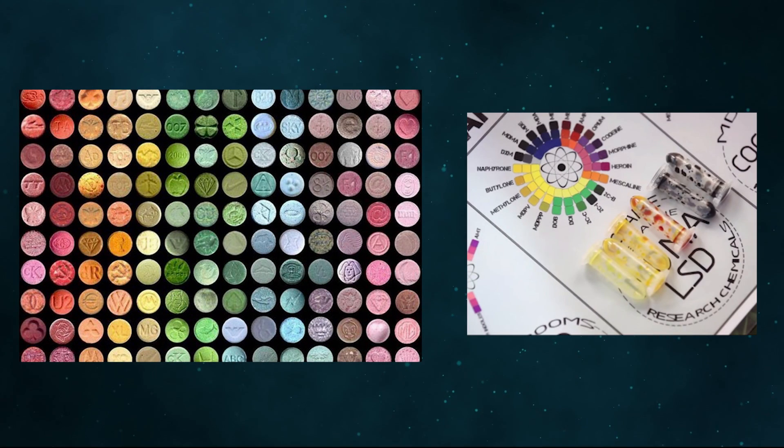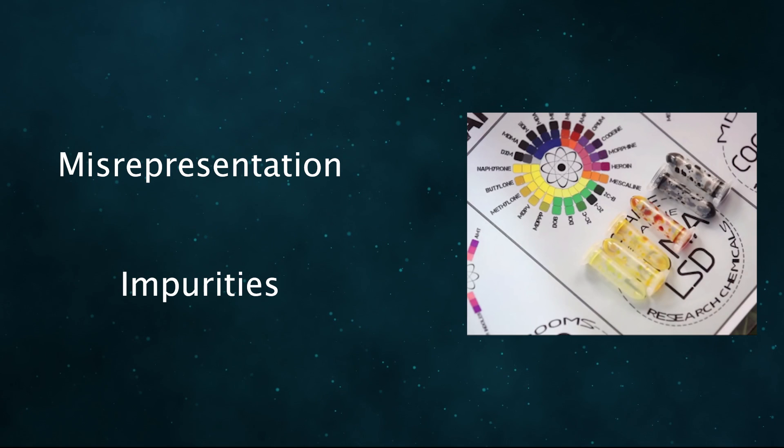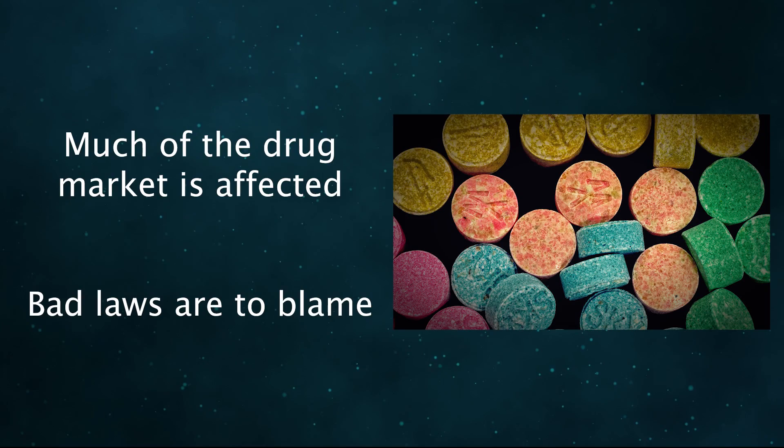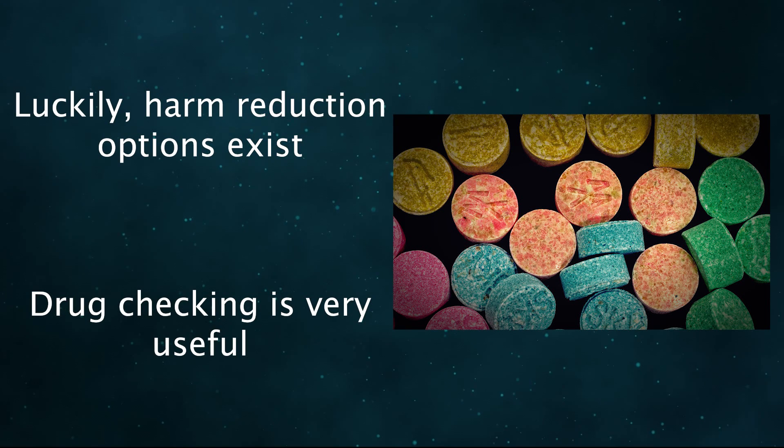One of the worst parts of prohibition is that it severely reduces the quality of drugs. Misrepresentation, selling one drug as another, and impurities are incredibly common. There's effectively no part of the drug market that's not affected by this issue, and it's largely caused by terrible laws. Although things will never be ideal with the current laws, there are ways to reduce the harm certain substances can bring.